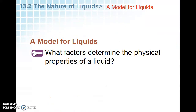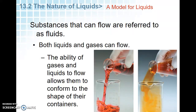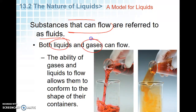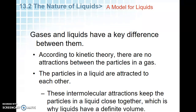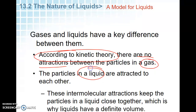What factors determine the physical properties of a liquid? The first one: substances that can flow are called fluids. Liquids and gases are considered fluids. What's common about them is that they conform to the shape of their container. However, there are no attractions in a gas according to kinetic theory, but particles in a liquid are attracted to each other. These attractions keep particles close together, so liquids have a definite volume — gases do not.